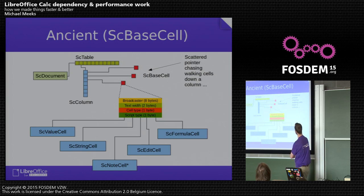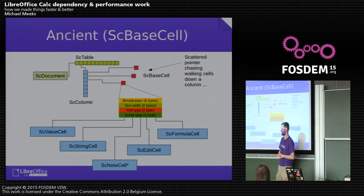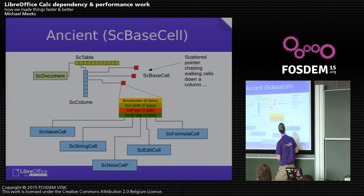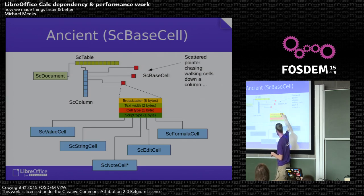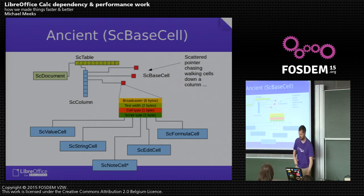Ancient SC base cell. Calc has been systematically refactored in the last two years and we've made some huge progress. It used to look like a mess — every cell in your spreadsheet was scattered somewhere randomly in memory, miles away. So walking along the data would result in cache misses everywhere. Loads of stuff was shoved into each cell: broadcasters, bits of text width, cell types, script types, subclassed into all sorts of different things including an empty cell which stored dependencies.